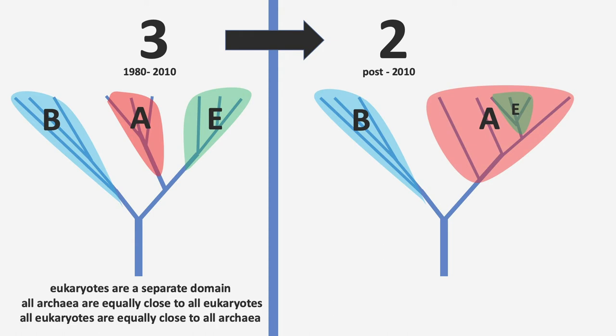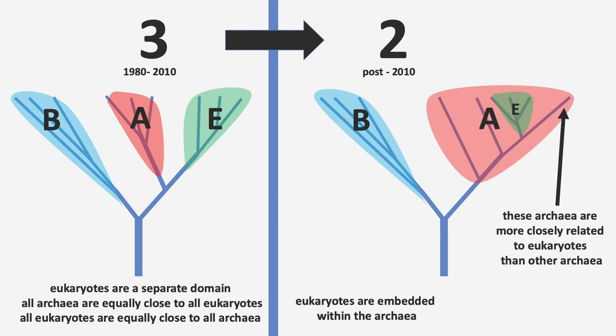On the left, the eukaryotes are a separate domain, and all archaea are equally close to all eukaryotes, and all eukaryotes are equally close to all archaea. On the right, the eukaryotes are embedded within the archaea. The branch on the right — those archaea — are more closely related to eukaryotes than other archaea are to eukaryotes. And they're called Asgard. We'll see more of them soon.